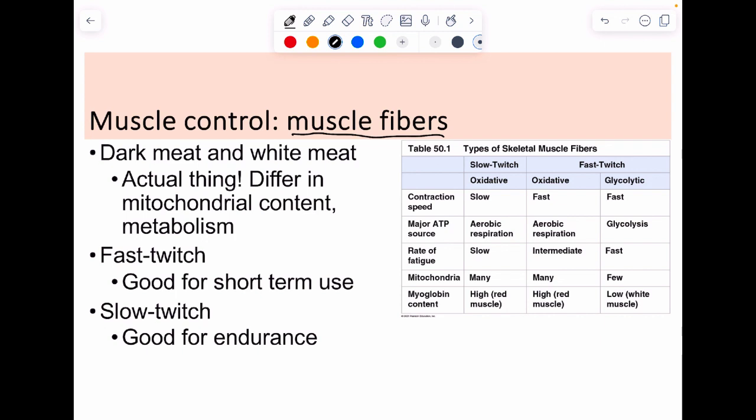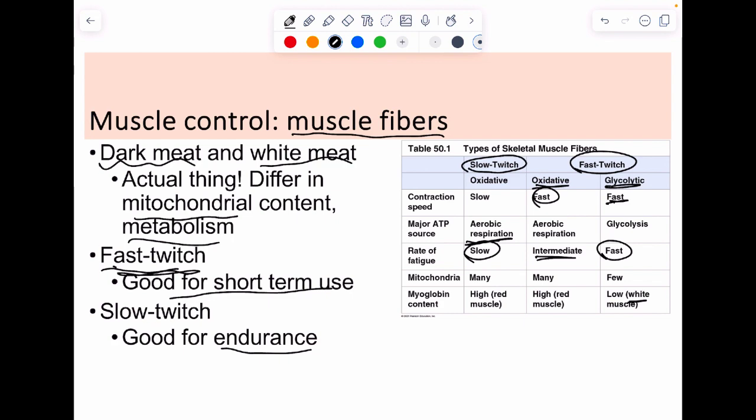Muscles don't all act the same. In the dietary world, we refer to this as white meat and dark meat—it has to do with mitochondria and metabolism. Fast-twitch fibers are good for short-term use. Glycolytic fast-twitch are good for really fast motion but tire really fast—typically white colored. Oxidative fast-twitch are also fast but take longer to tire out, like your arms versus chest. Slow-twitch has to do with endurance, going through lots of aerobic respiration. They take a long time to contract but forever to get tired—think of your core.